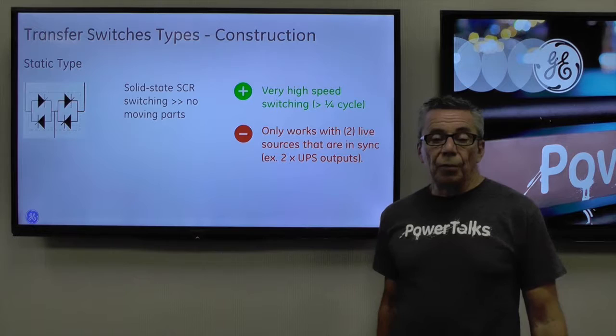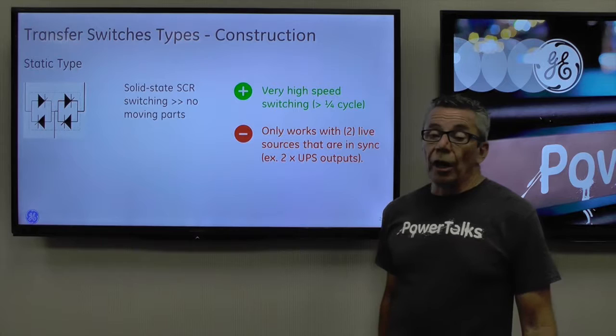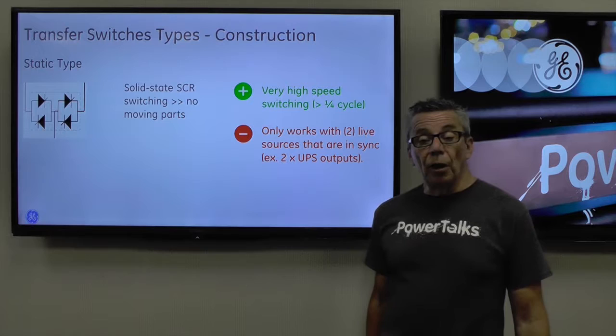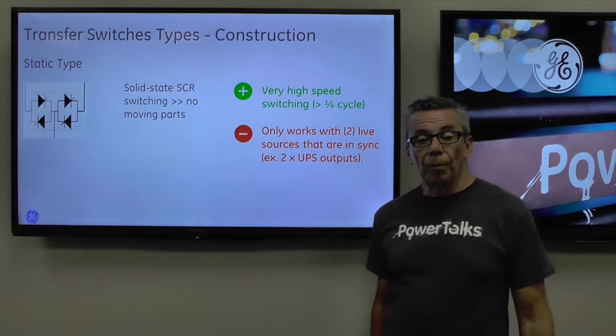The static type is usually implemented with solid state SCR switching, so there are no moving parts. It offers very high speed switching — typically less than a quarter of a cycle — but it only works with two live sources that are in sync. In other words, two UPS outputs is very typical.